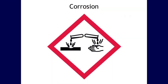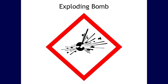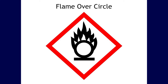The corrosion pictogram means the product could cause skin corrosion or burns, irreversible eye damage, or be corrosive to metals — be sure to read directions carefully and wear proper personal protective equipment. The exploding bomb pictogram appears in the hazard communication labeling system, though there's little we use in dentistry that explodes. The flame over circle pictogram stands for oxidizer — there may be products used in a dental laboratory that are oxidizers.